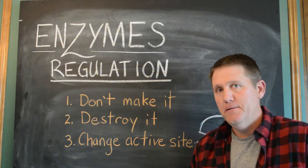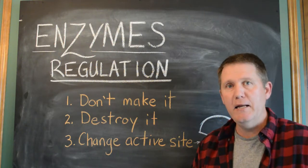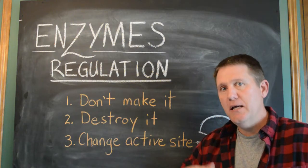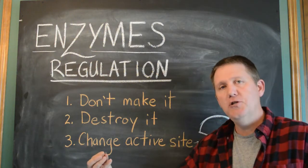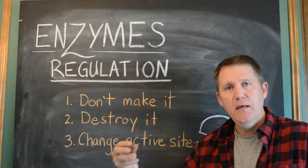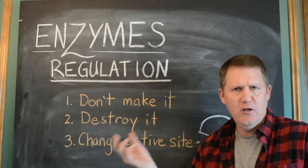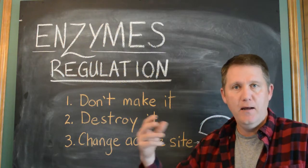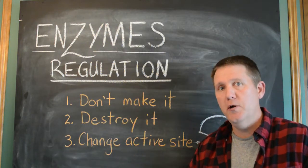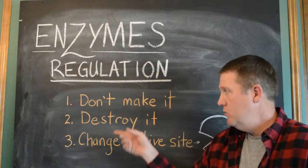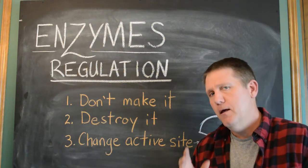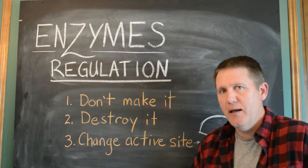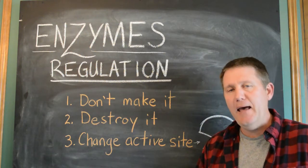We can also destroy the enzyme. Once we're done with it, just break it down. That happens in the stomach — we use those enzymes to digest proteins, they get flushed out into the small intestine, and then they're deactivated because they don't work in the pH of the intestines. The enzymes in the intestines actually destroy and digest them. A more elegant solution, though, is to just change the enzyme itself — specifically, the active site.